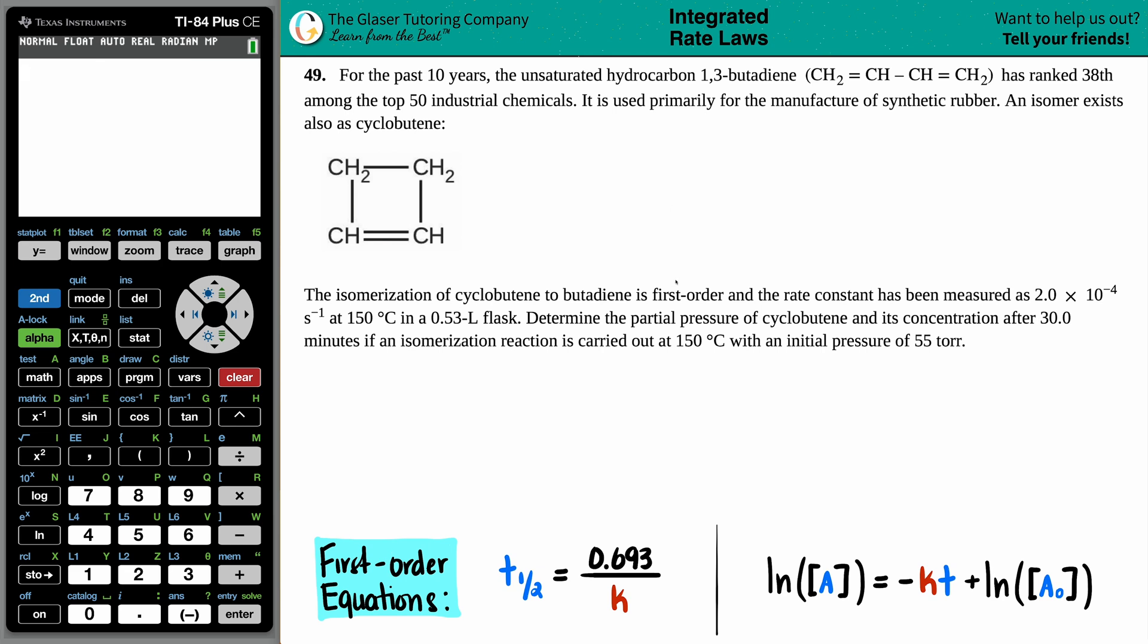Number 49. For the past 10 years, the unsaturated hydrocarbon 1,3-butadiene, which is CH2 double bond to a CH, single bond to a CH, double bond to a CH2, has ranked 38th among the top 50 industrial chemicals. Do they have like award ceremonies for industrial chemicals? That's pretty cool. It's used primarily for the manufacture of synthetic rubber. How cool is that? And an isomer exists also as cyclobutene.